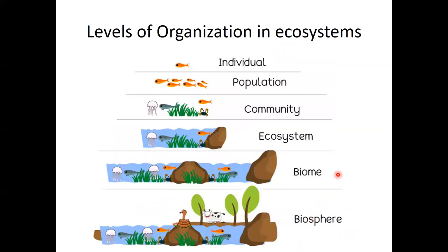Levels of organization inside an ecosystem. When we start at the bottom, we start with an individual, or an individual species. To make it simple, we're going to pretend that's a goldfish. When I have a group or school of these goldfish, they're going to be called a population — a grouping of many individuals that are all of the same species.